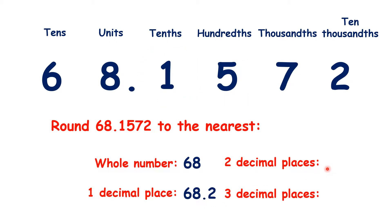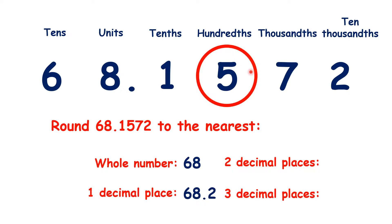If we're rounding to two decimal places, we need to find our hundredths, because that's always the second digit after the decimal point. Looking to the right, we can see that we need to round up, so we have 68.16.